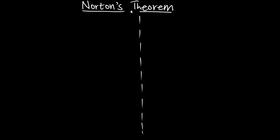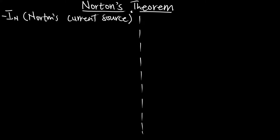In this episode we are going to talk about Norton's theorem. Norton's theorem is one of the theorems that help us to find current in one active element, just as we saw for Thevenin's theorem. In Norton's theorem, we are interested in three parameters: IN, which is the Norton's current source, and RN, which is the Norton's resistance.